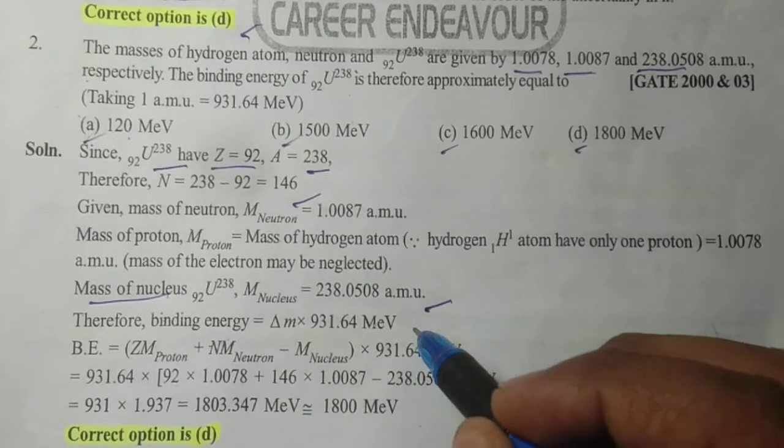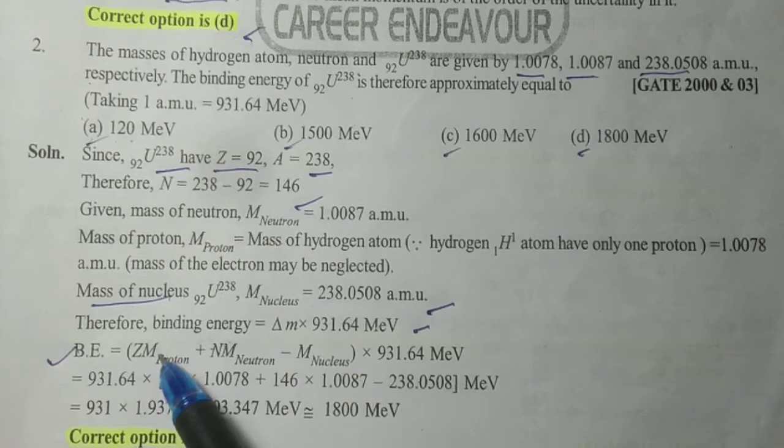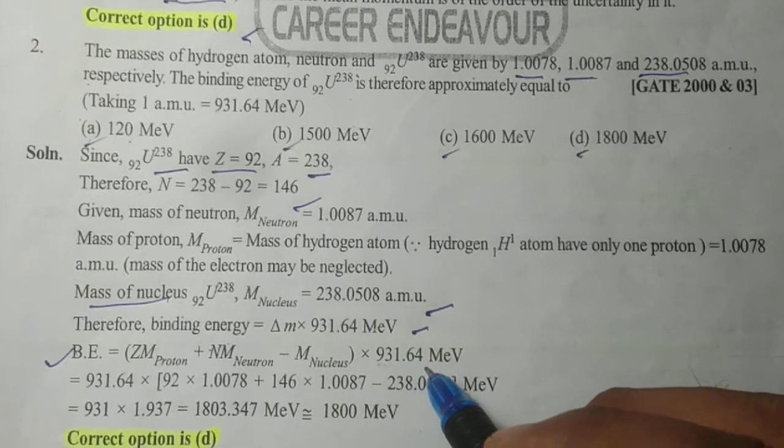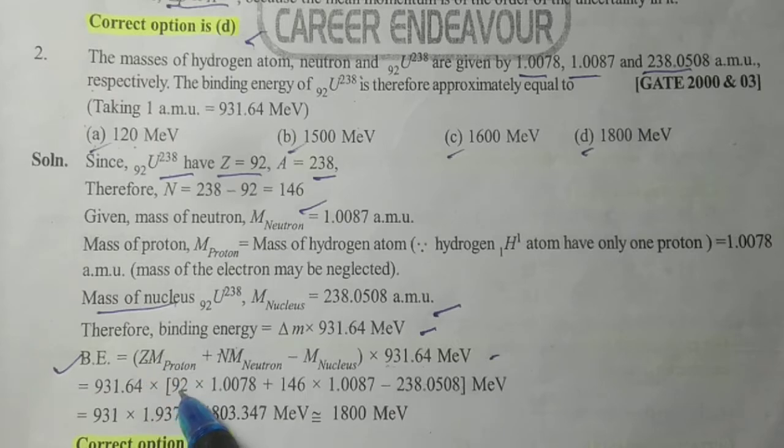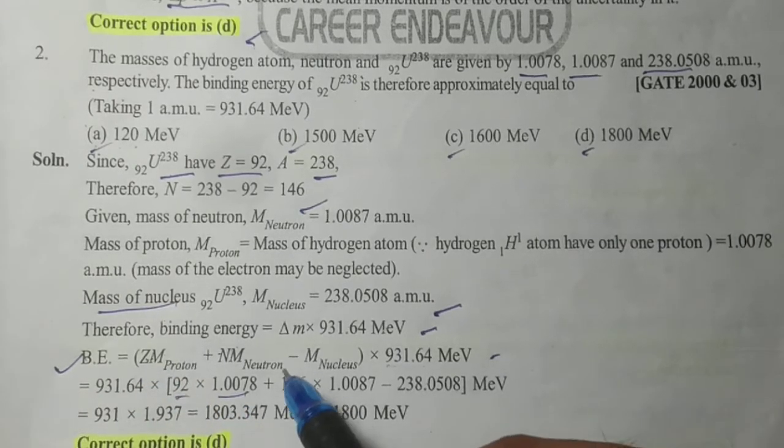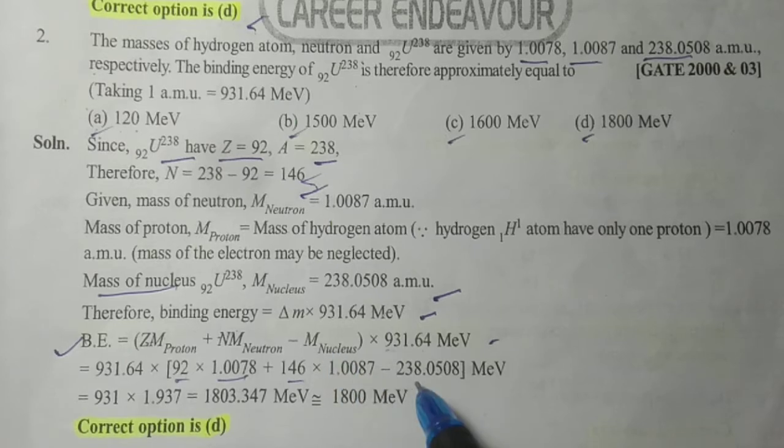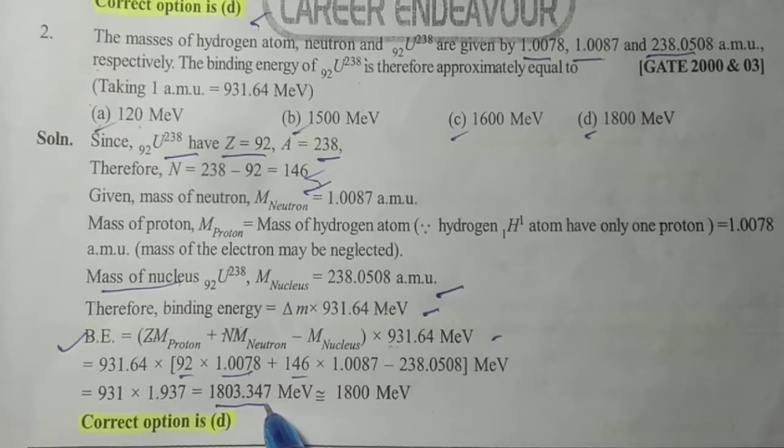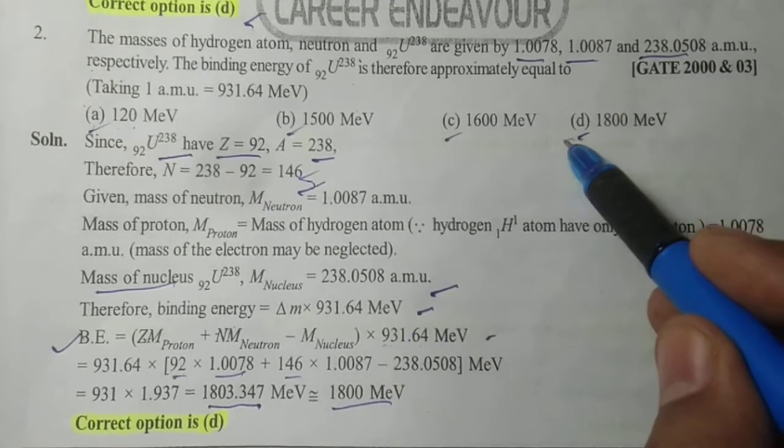The mass of uranium nucleus is 238.0508 amu. Therefore, the binding energy equals delta M times 931.64 MeV. From the relation, binding energy equals Z times mass of proton plus number of neutrons times mass of neutron minus mass of nucleus, times 931.64 MeV. Substituting all these values: 92 times mass of proton plus 146 times mass of neutron minus mass of nucleus. After solving, we get 1800.347 MeV, which is nearly equal to 1800 MeV. So the correct option is D.